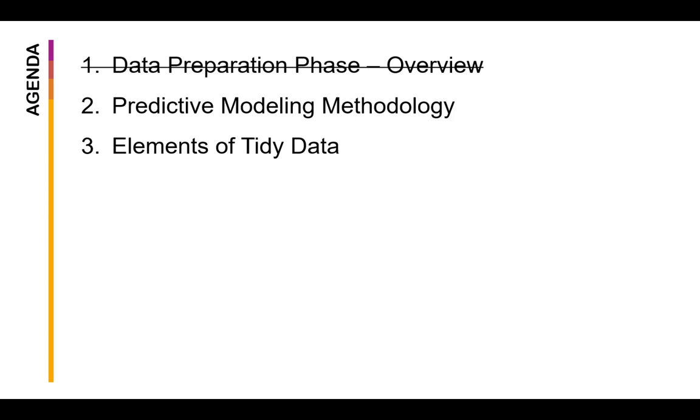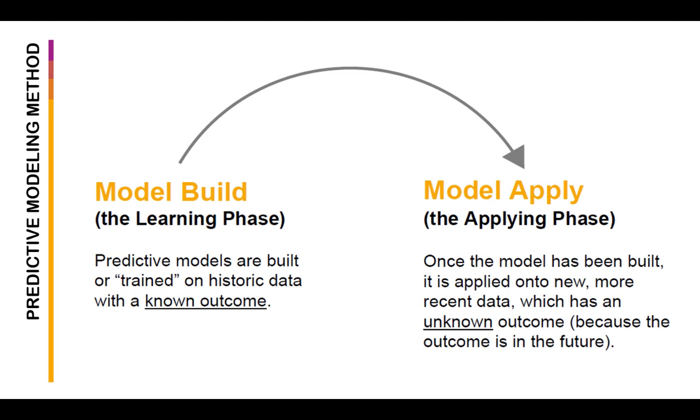Now let's take a look at the predictive modeling methodology. There are two main phases in predictive modeling. The first one is building the model or the learning phase. During this phase, predictive models are built or trained on historic data with a known outcome. The second phase is the applying phase. Once we have the model built from the learning phase, we can now apply this into new, more recent data which has an unknown outcome.